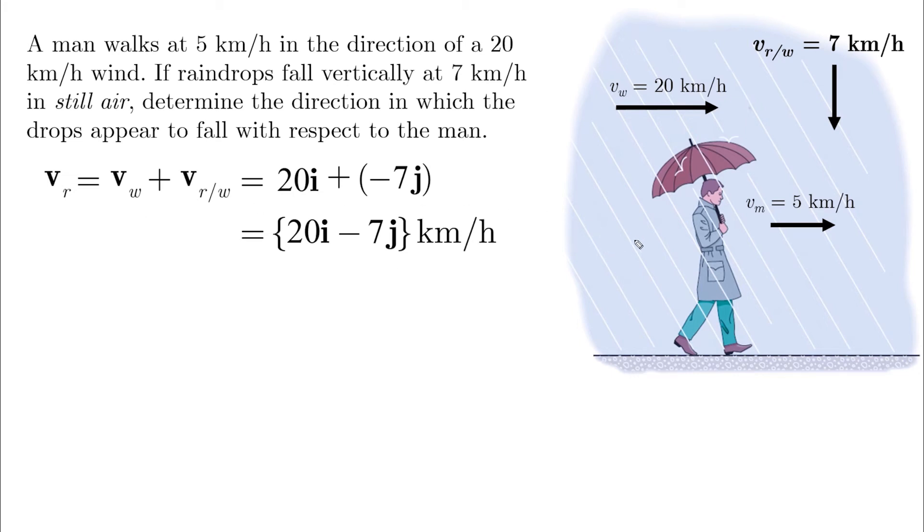And this makes sense because, as you can see, those white lines are the raindrops. And they are at an angle, which is in the i positive and in the j negative.